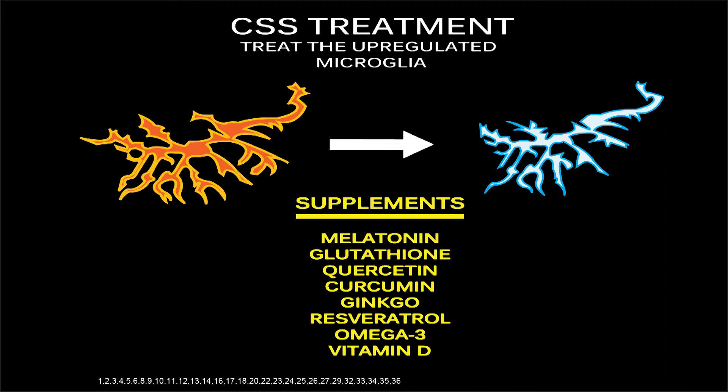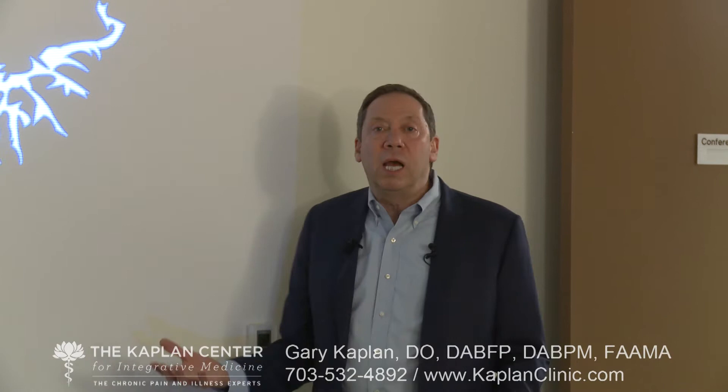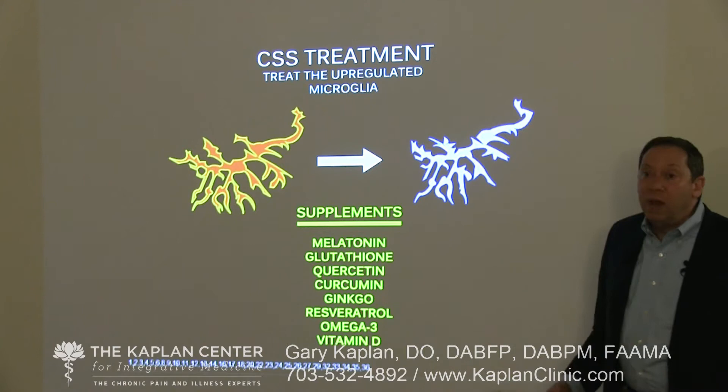Cannabis — CBD actually reduces the activity of the microglia and can be effective. THC will get you high; CBD is what can help with pain, anxiety, and depression, because this is a neuroinflammatory disease. There are also a large number of supplements that can be effective, and the studies back this. The studies support the use of melatonin, glutathione, quercetin, curcumin, ginkgo, resveratrol, omega-3s, and vitamin D.